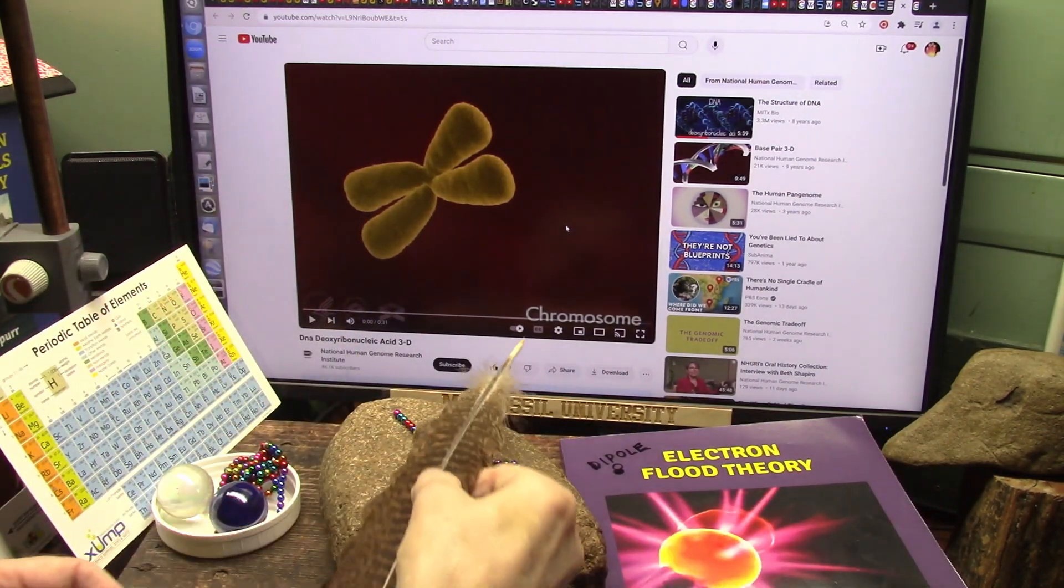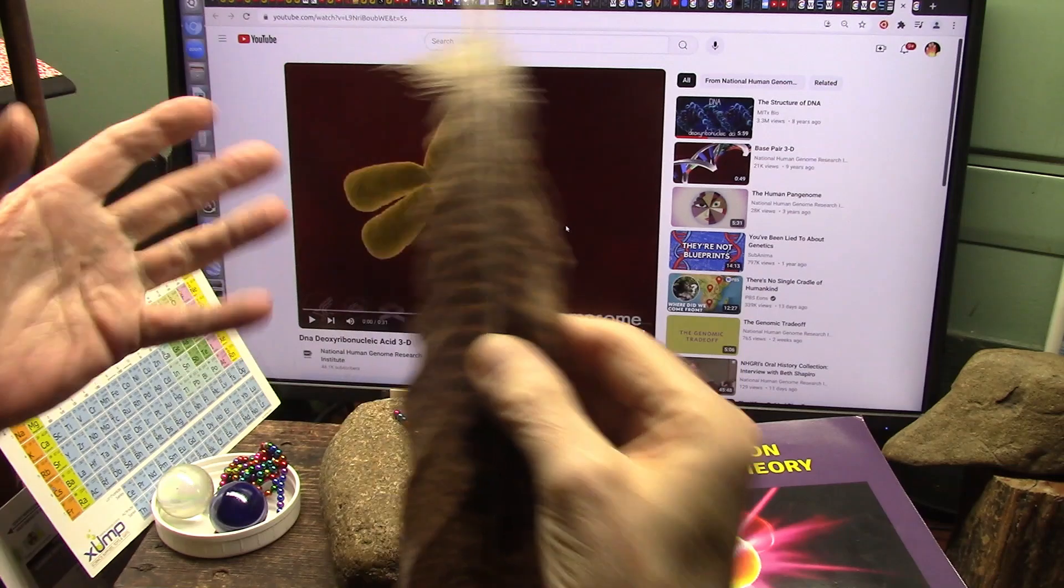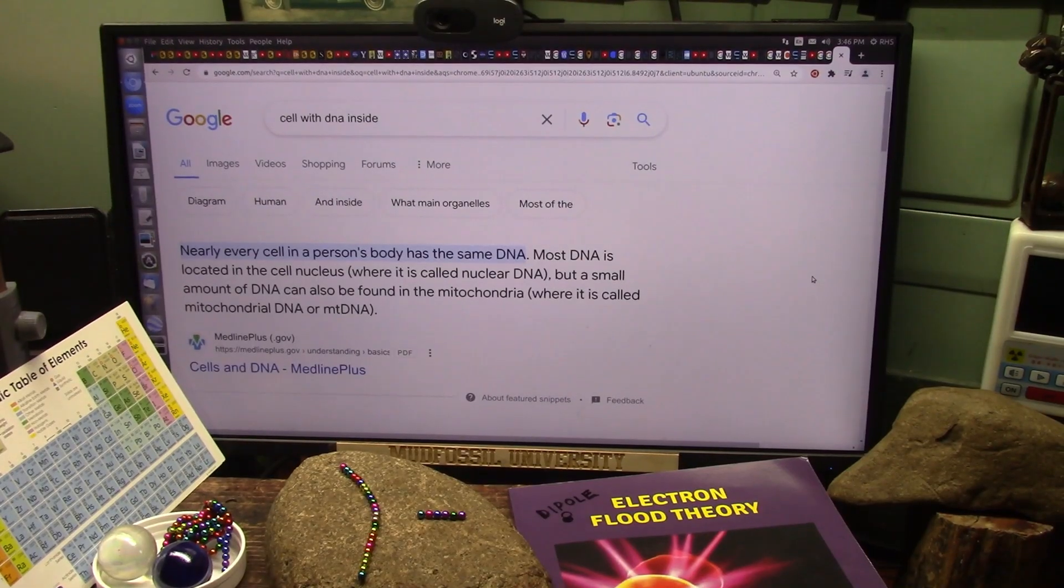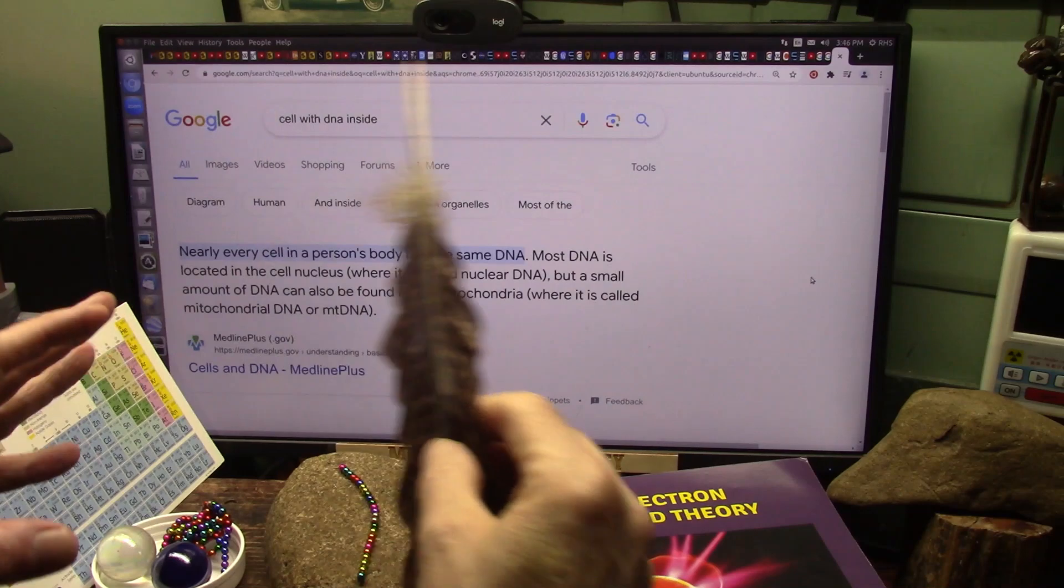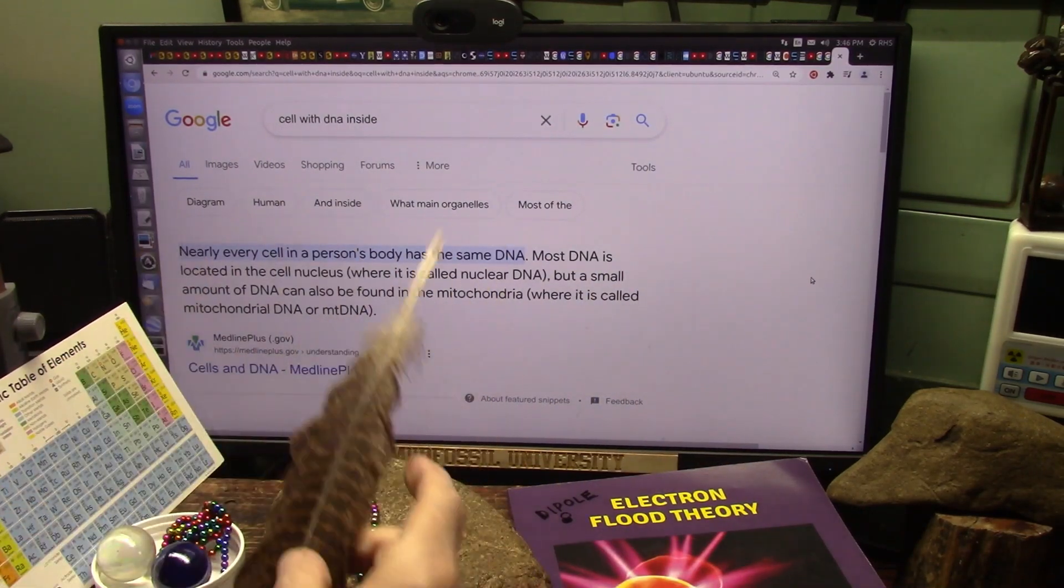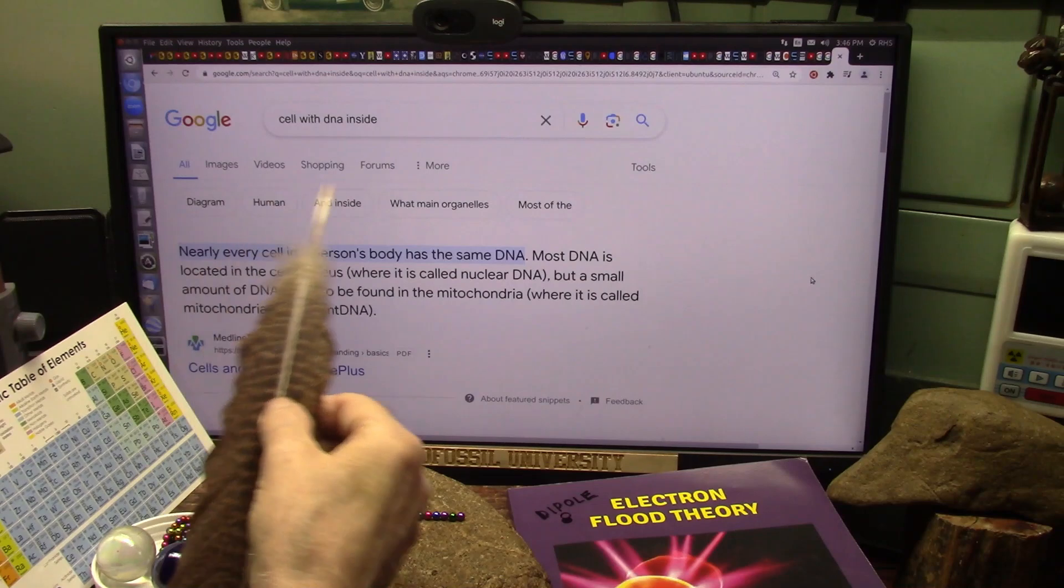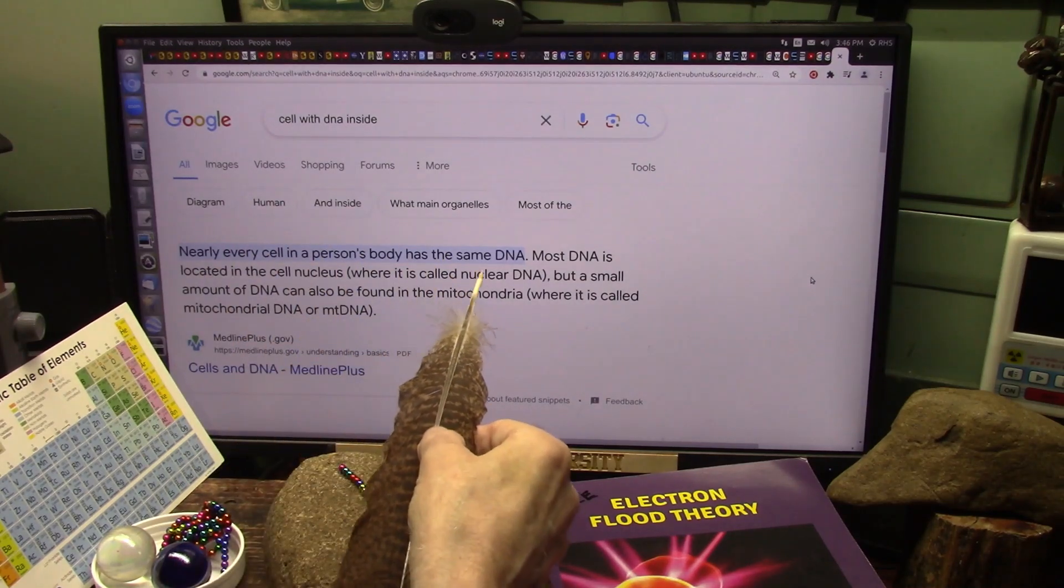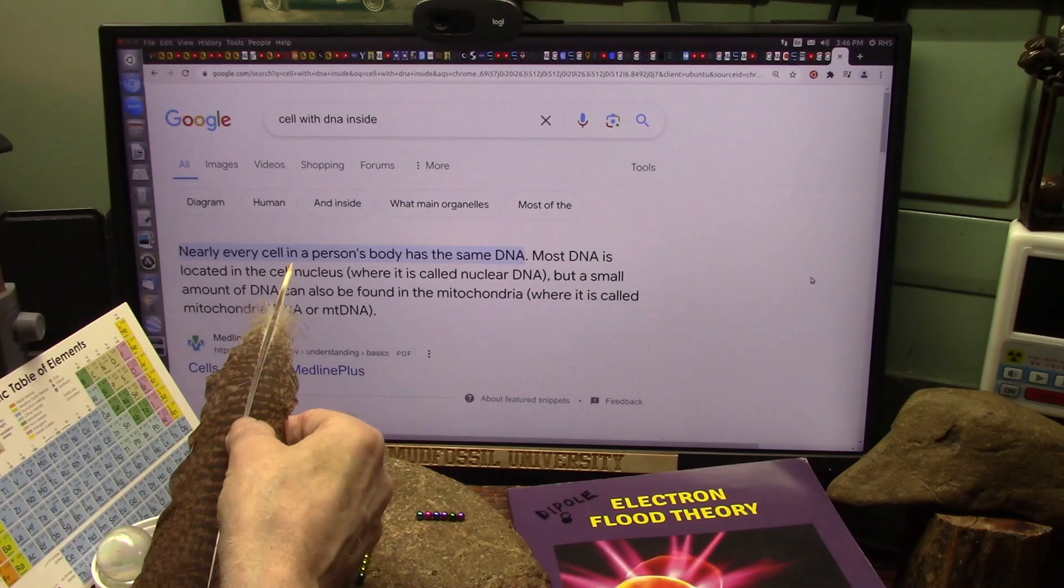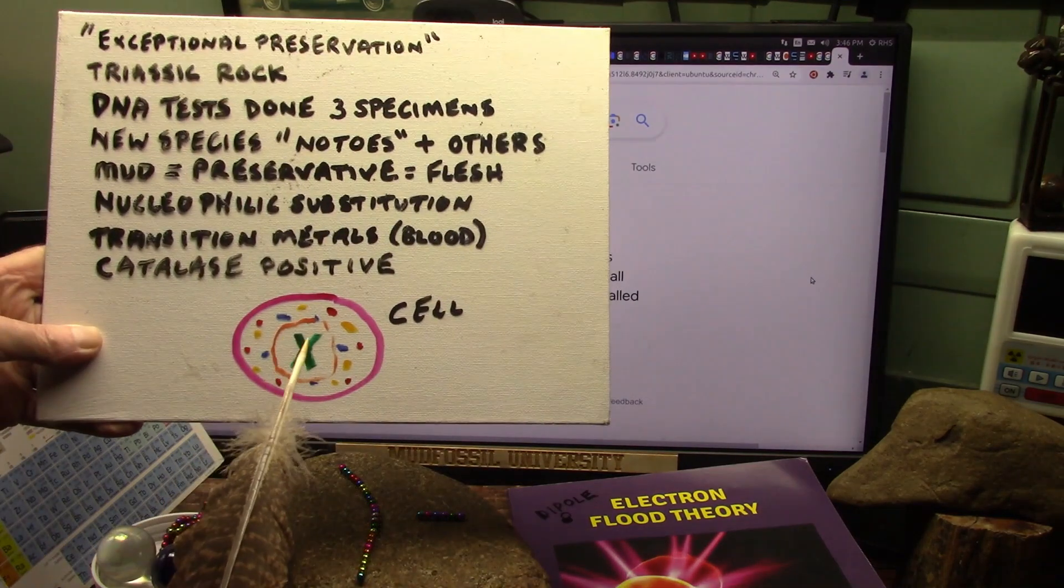Everybody's heard of DNA, and you heard of chromosomes. Well, first of all, what is a chromosome? I've done a lot of work with DNA and the mud fossils and all that. This has been DNA tested and everything. Now, every cell basically in the person's body has the same DNA. Most DNA is located in the cell nucleus, which is the center of the cell.